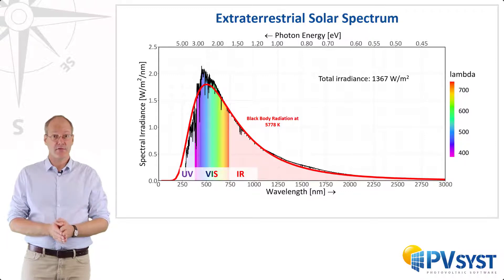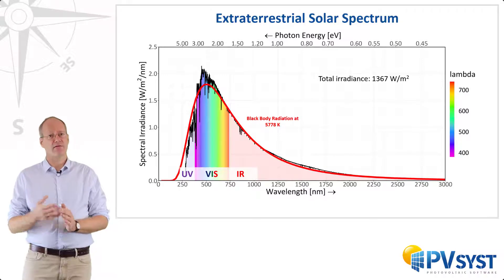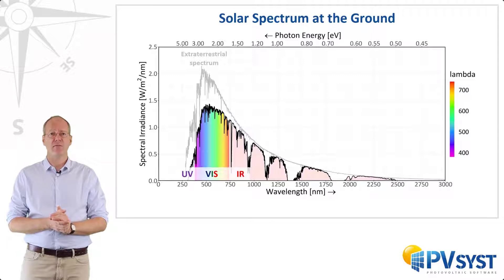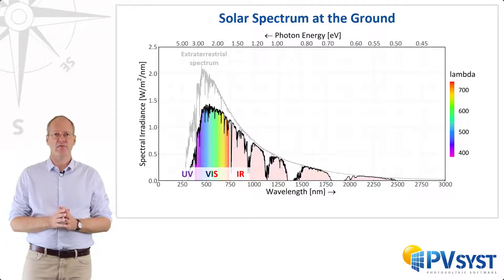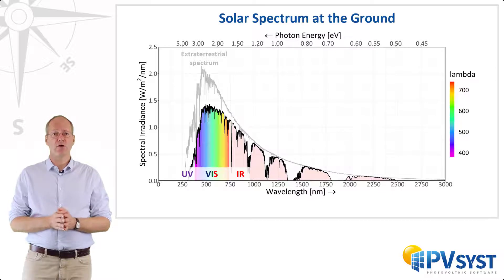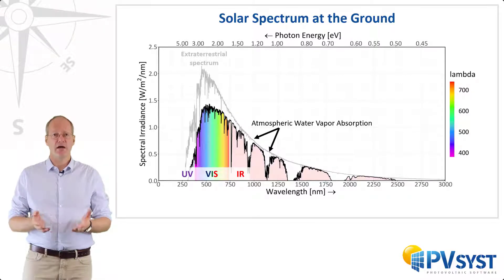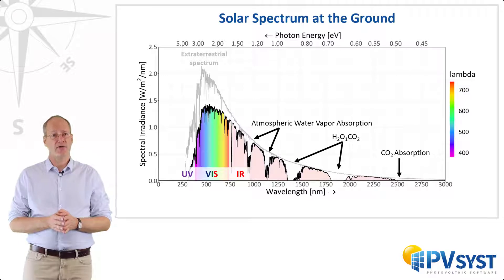For an observer situated at the surface of the Earth, this spectrum changes due to scattering and absorption of the light as it travels through the atmosphere. Here you can see an example of a solar spectrum at ground level compared to the extraterrestrial spectrum shown in light gray. There is a general attenuation throughout the spectrum, leading to a lower global irradiance. In addition, there are several significant dips in the spectrum, mostly in the infrared region. These dips are due to the absorption of light by several gases — water vapor, carbon dioxide, and a combination of both are the most significant.